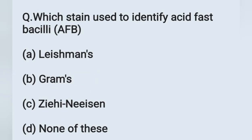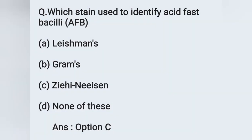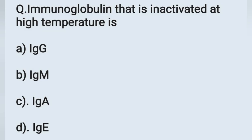The next question: Which stain is used to identify acid fast bacilli? Option A: Leishman's, option B: Gram's, option C: Ziehl-Neelsen, option D: none of these. The stain used to identify acid fast bacilli is Ziehl-Neelsen stain. Option C is the correct answer. Ziehl-Neelsen staining is commonly used to identify Mycobacterium tuberculosis.